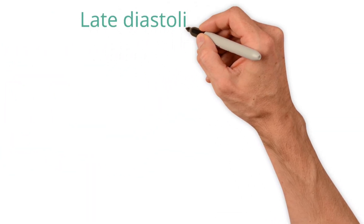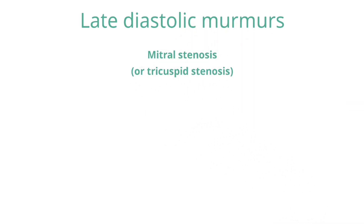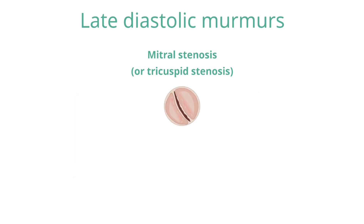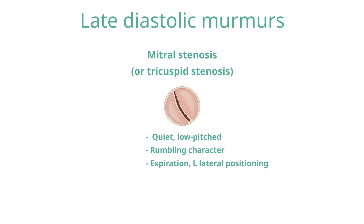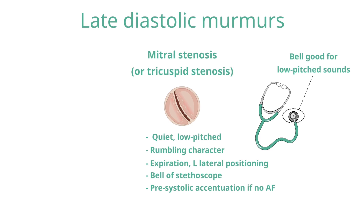Mid to late diastolic murmurs are caused by mitral stenosis or, more rarely, tricuspid stenosis. In both, the murmur is often low-pitched, rumbling in nature and very quiet. The murmur in mitral stenosis is often only audible on expiration, left lateral tilt, and with the bell of the stethoscope, which is best for low-pitched sounds. If the patient is in sinus rhythm, there is often pre-systolic accentuation where the murmur gets louder just before S1 due to atrial systole forcing blood through the narrowed valve. If the patient is in AF, there is no pre-systolic accentuation, and AF is very common in those with mitral stenosis.